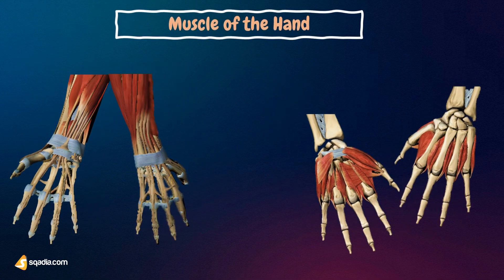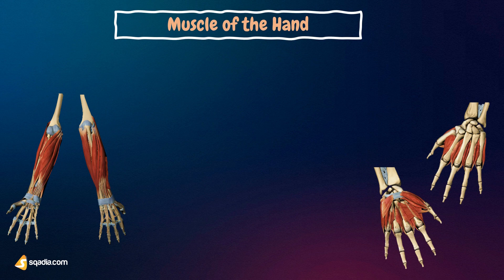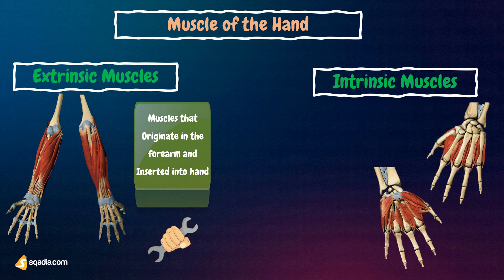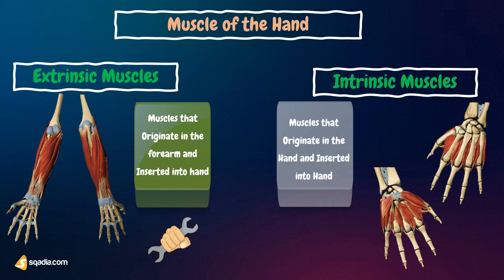If we look at the muscles of the hand, the muscles that act on the hand can be divided into two groups. Extrinsic muscles are located in the anterior and posterior compartments of the forearm; they control crude movements and produce a forceful grip. Intrinsic muscles are located within the hand itself and are responsible for the fine motor functions of the hand.